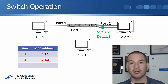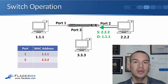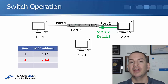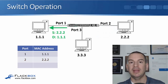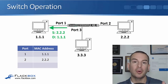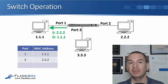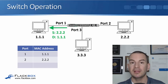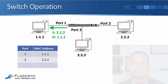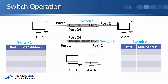Host 2.2.2 is going to send some traffic back, so it sends a reply from the source MAC of 2.2.2 to the destination MAC address of 1.1.1. That will hit the switch again. The switch will see that traffic has come from a source of 2.2.2 on port 2, so it will put that into its MAC address table. It will then send the frame out only port 1 because it knows that 1.1.1 is available on port 1.